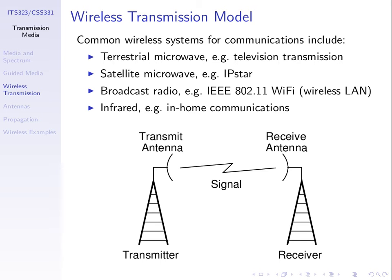We need to understand the role of the antennas — what they do and what their characteristics are. The other thing we need to understand is when we transmit a signal, how far can we send it wirelessly? Often we'd like to set up two points and know how far apart they can be while still being able to communicate, which depends on how much signal is lost when transmitting through the air.